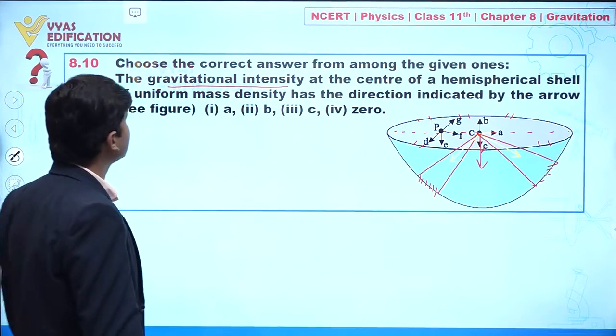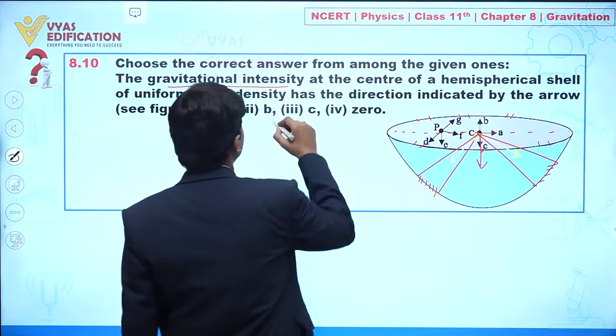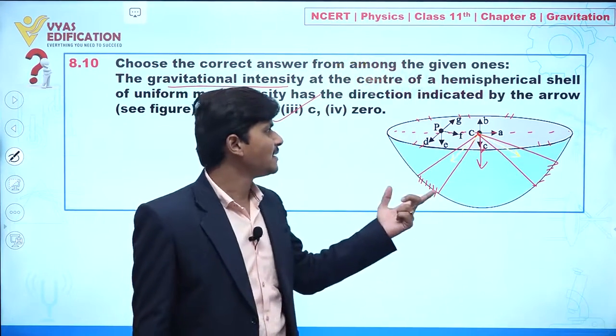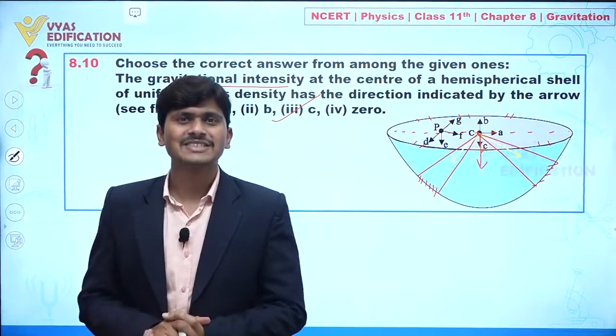So correctly we can say that the direction of electric field intensity will be indicated by C. Clear to you? So this is all about this question.